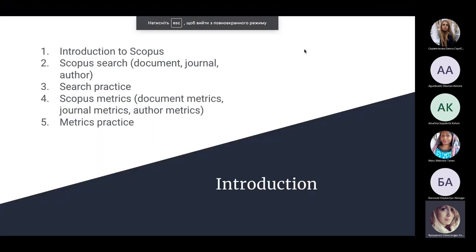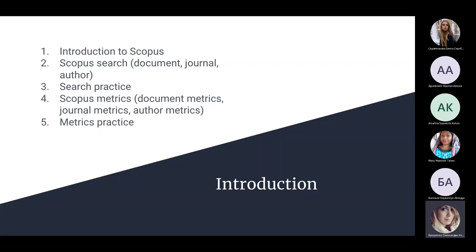We will start with an introduction to Scopus, then go to Scopus search, do some advanced practices in document, journal, and author searching. Then we will look into metrics and do some practices in document metrics tracking, journal metrics tracking, and comparing different journals. We will look into author metrics and then compare to Web of Science, and do some practice as well.